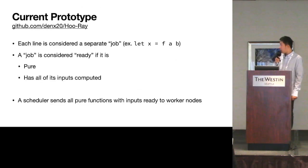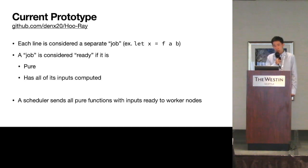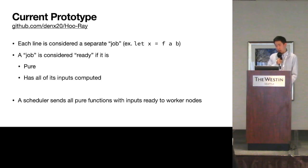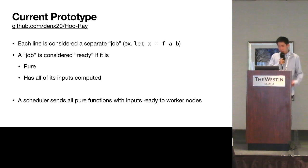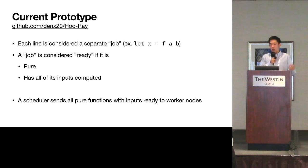There are many limitations with our prototype. We consider each line as a separate job, which raises the question of granularity. We're currently only working with pure functions. A job is scheduled as soon as all its inputs are computed. Our scheduler sends functions with their inputs to worker nodes, and when they finish computing they send results back to the master node.